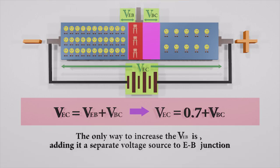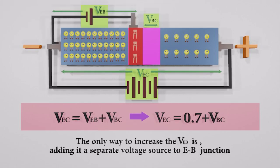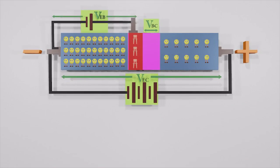So the only way to increase the VEB is adding a separate voltage source to the EB junction. A very strange and interesting thing happens now.